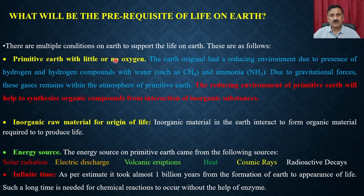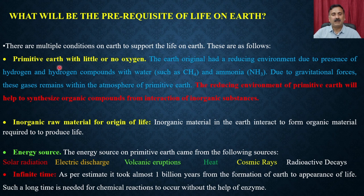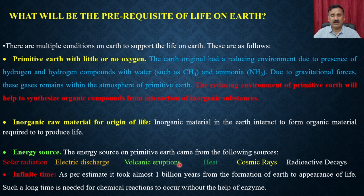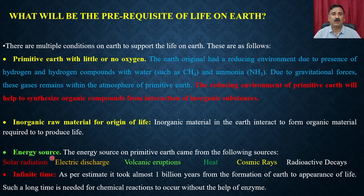There is a specific condition: primitive earth had very little or no oxygen, and that was the first criterion for why earth was chosen as the planet for the origin of life. There were also a lot of inorganic raw materials required to produce organic material, and an energy source was needed — such as solar radiation, electric discharge, volcanic eruptions, heat, cosmic rays, or radioactive decay — along with infinite time. It took almost 1 billion years from the formation of earth to the appearance of life.